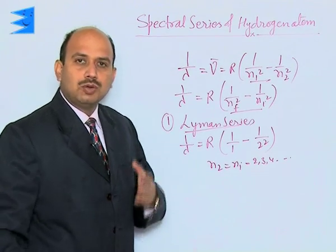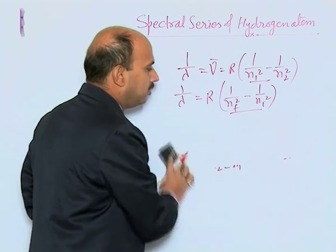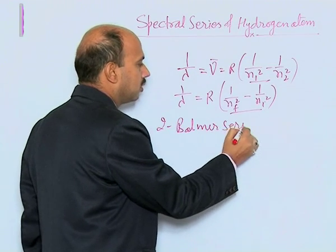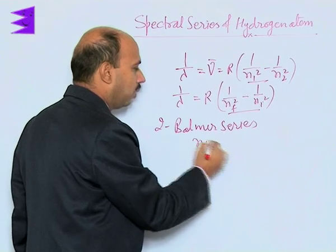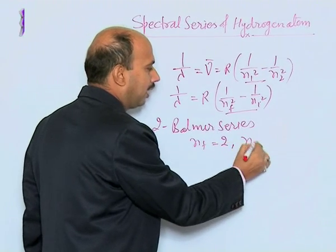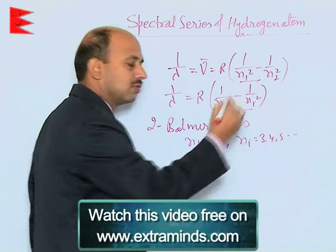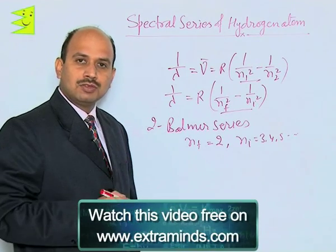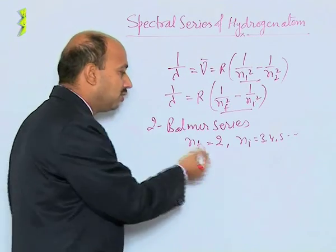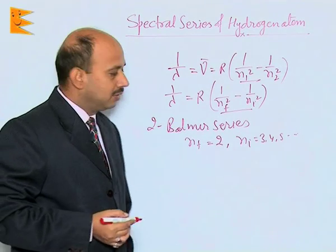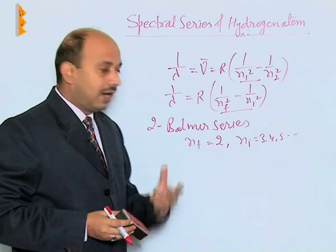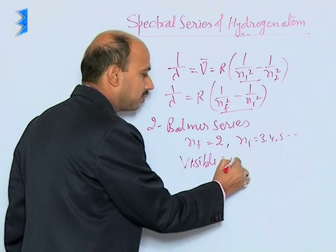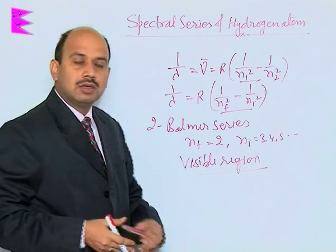The second one is the Balmer series. In the Balmer series, n_f is equal to 2 and n_i is equal to 3, 4, 5, and so on. It means electrons are jumping from the third orbit to the second, from the fourth orbit to the second, or from other higher orbits to the second orbit. Whatever spectrum is obtained in this case is called the Balmer series, and the spectrum lies in the visible region.